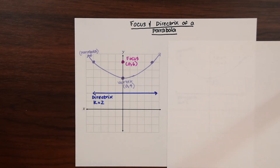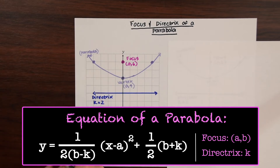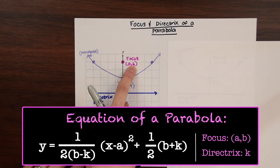There's also the equation of a parabola. It looks like: y equals 1 over 2 times (b minus k) times (x minus a) squared plus one half times (b plus k). Each thing here represents something: the directrix represents k and the focus is (a, b). So if we wanted to find the equation of this parabola we would use k equals 2 and the focus (a, b) as (0, 6).